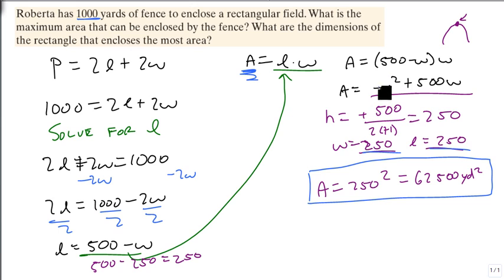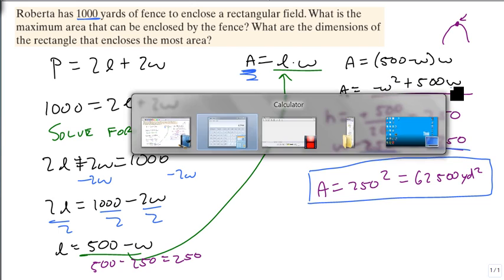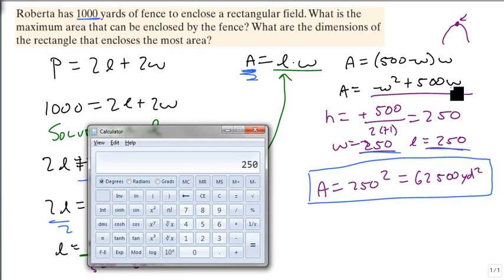Had I plugged 250 back in here, we would have gotten the same thing. So if I would have done 250 times 250, made that negative, that's our minus W squared. Then add to that 500 times 250. And we get the same answer. So I could have found it by finding K, or I can use what I know about functions to have found it. And so that gives us our answer.